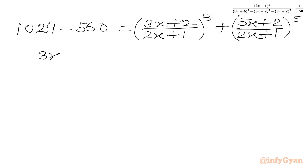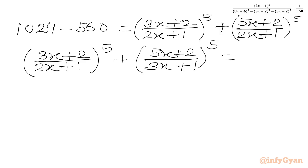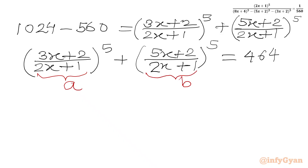Now 1024 minus 560 is 464. So I can write: [(3x+2)/(2x+1)]^5 plus [(5x+2)/(2x+1)]^5 equals 464. Now I will use substitutions: let A equal the first bracket and B equal the second bracket. So our first equation is A^5 + B^5 = 464.